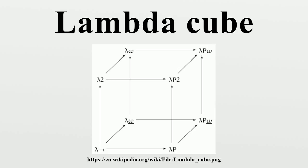The richest calculus in the cube, with all three abstractions, is the calculus of constructions. All eight calculi are strongly normalizing. Subtyping, however, is not represented in the cube, even though systems like higher-order bounded quantification,